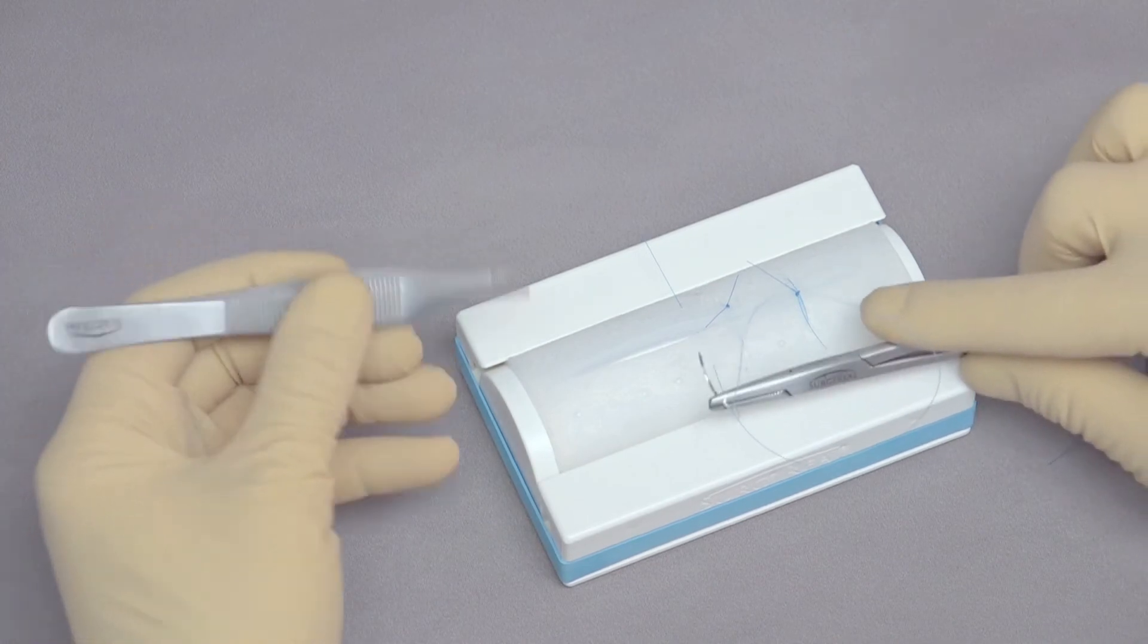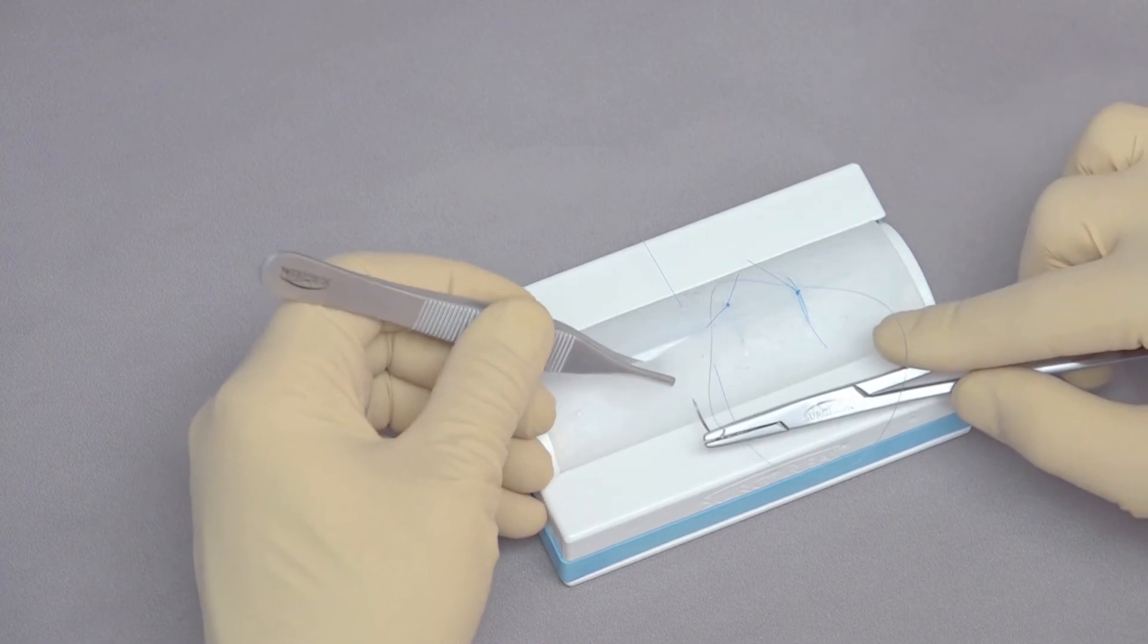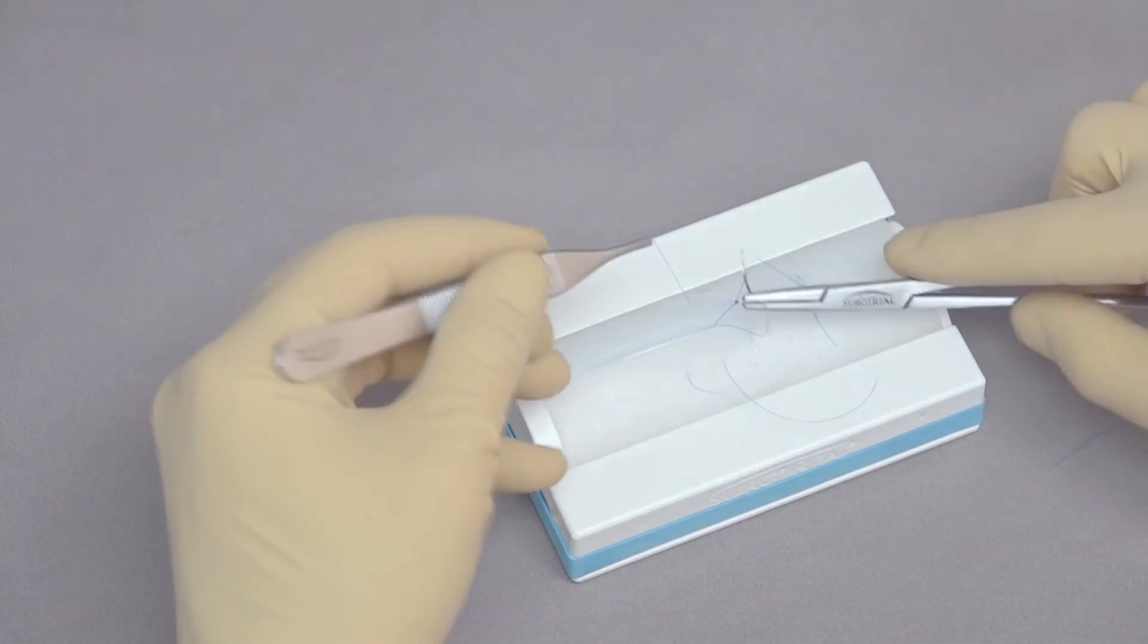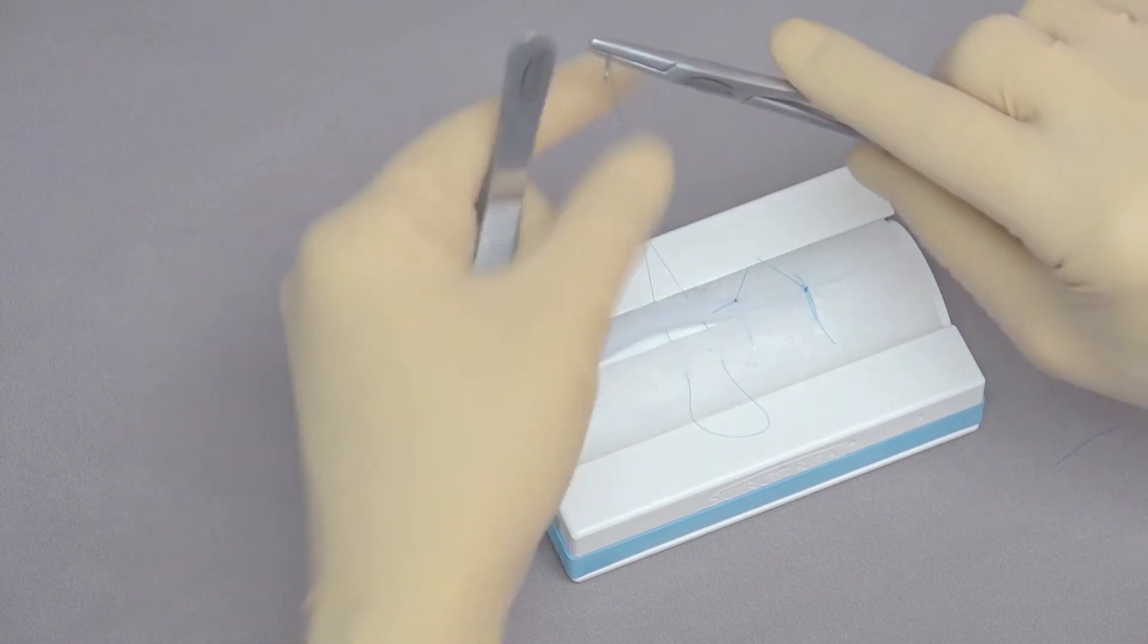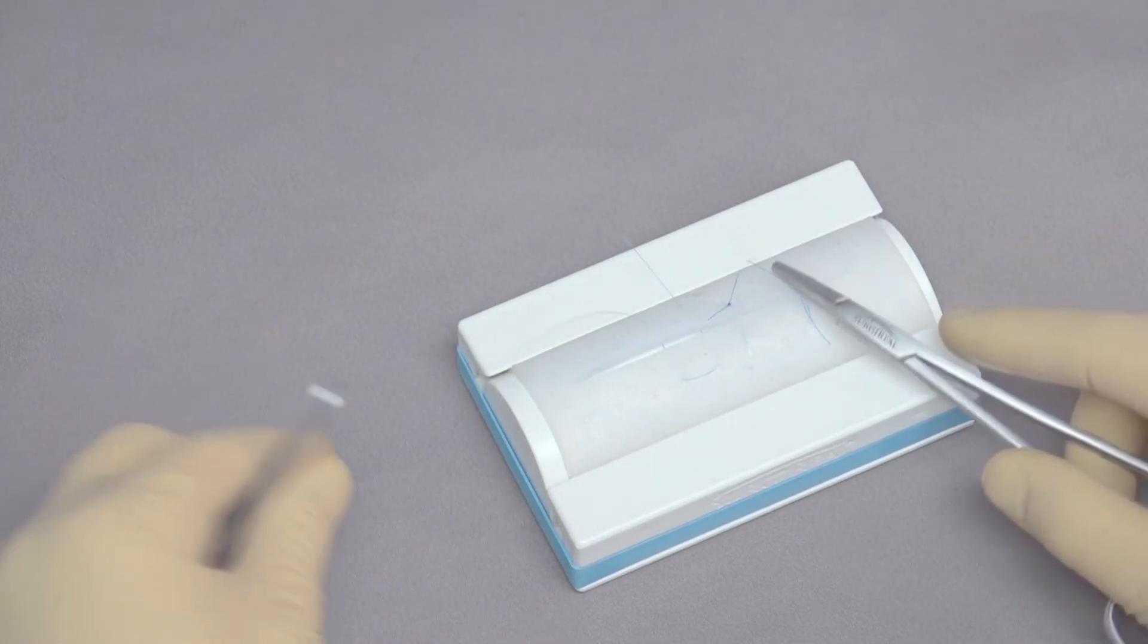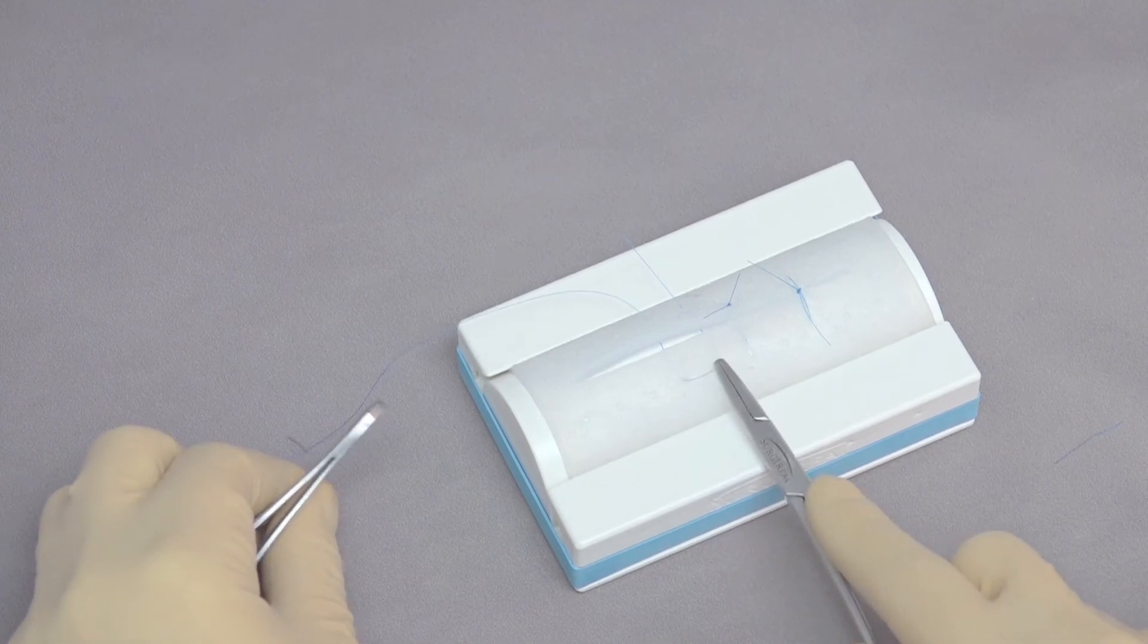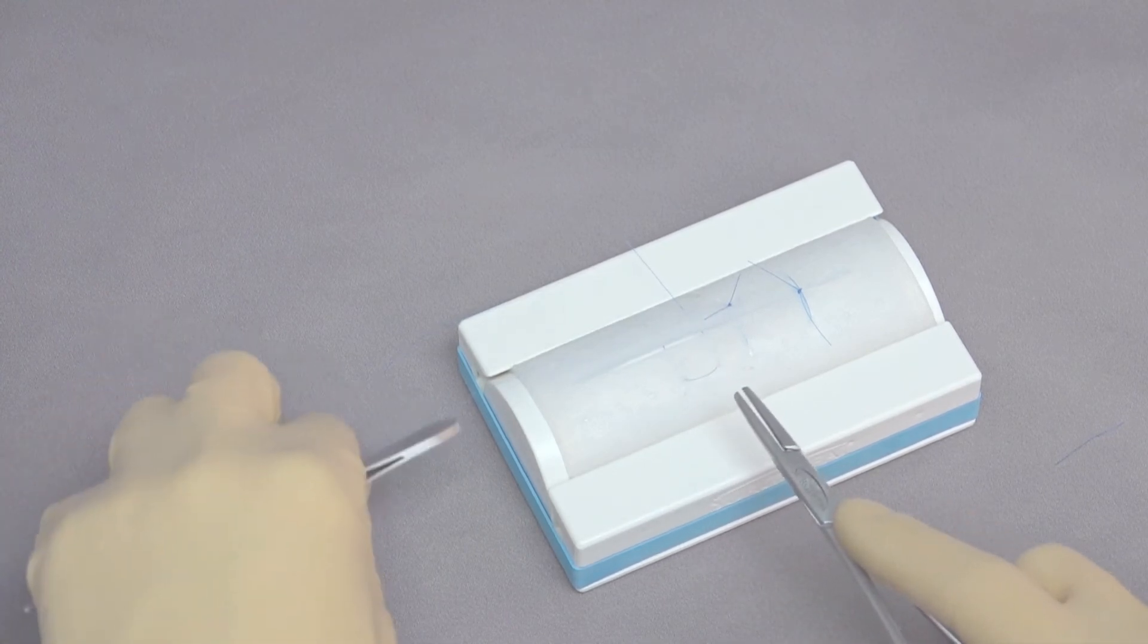Then the second part is backhanded, but instead of going in line with the first part, we move about a centimeter along the incision line. Similar to the vertical mattress, when we tie this, it will evert the tissue. But the tension relieving is very strong because it's coming across the skin here, which takes a lot of tension away. The problem is the blood supply is also coming from this angle, and it can remove some of the blood supply.